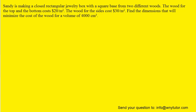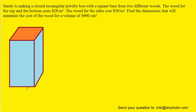What we want to do first is draw a picture of this closed rectangular jewelry box. Here is the box — we've colored the sides in blue, and the top and bottom are colored in orange. The question notes that the base has a square shape, so the length and width are the same dimension, which we can call X. We can call the height Y.